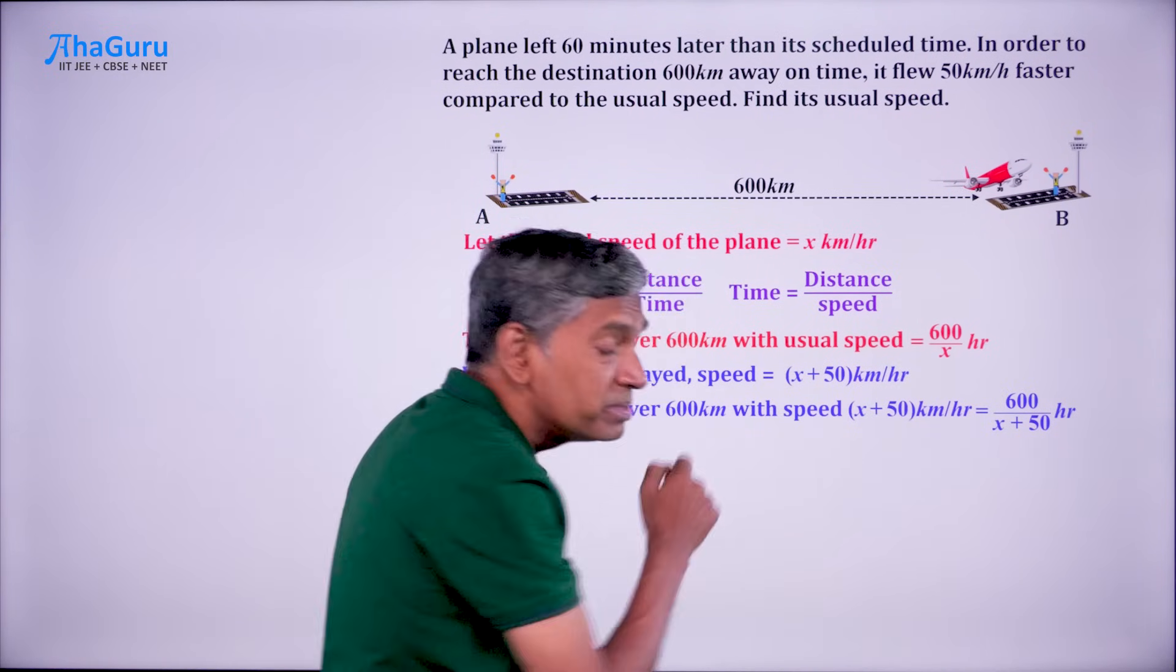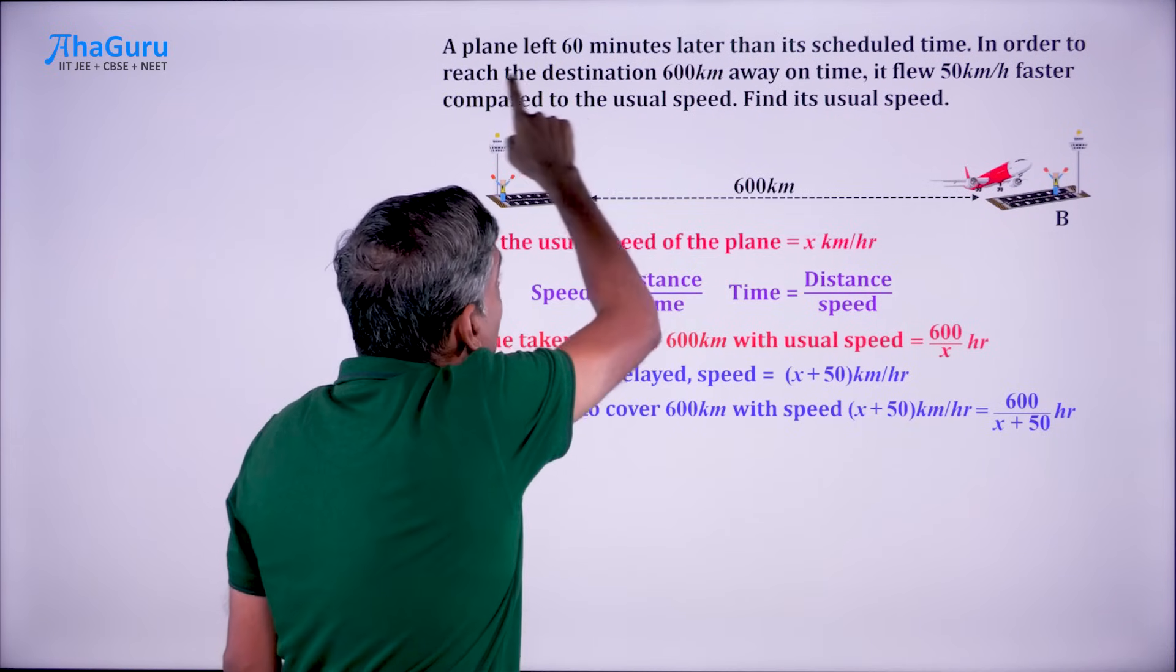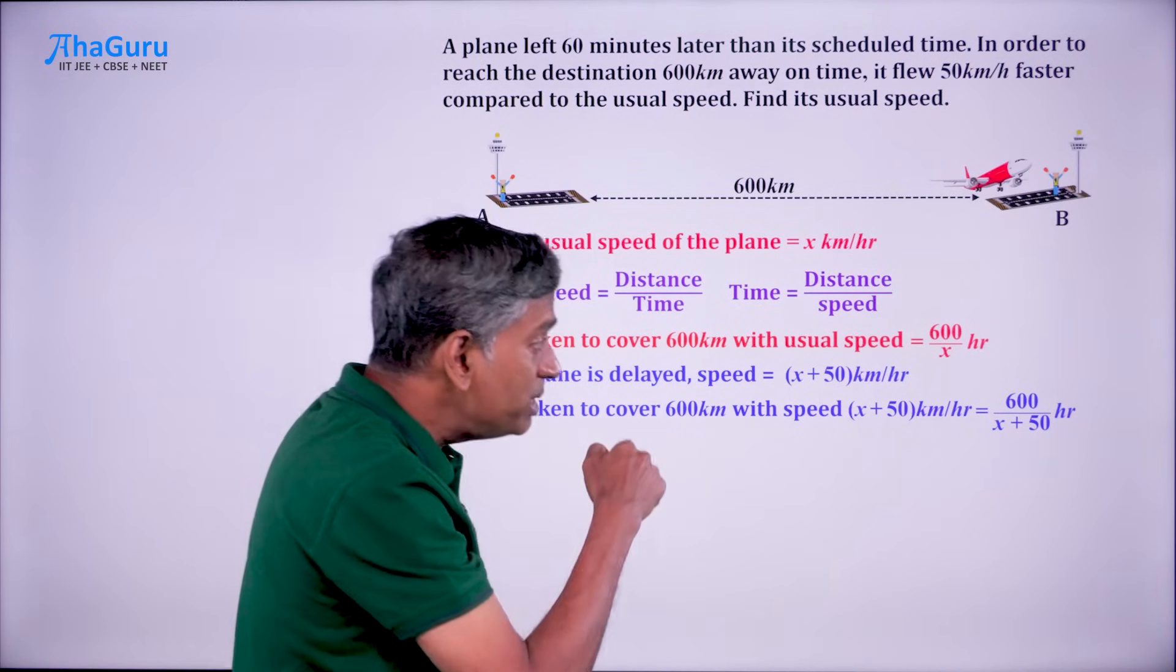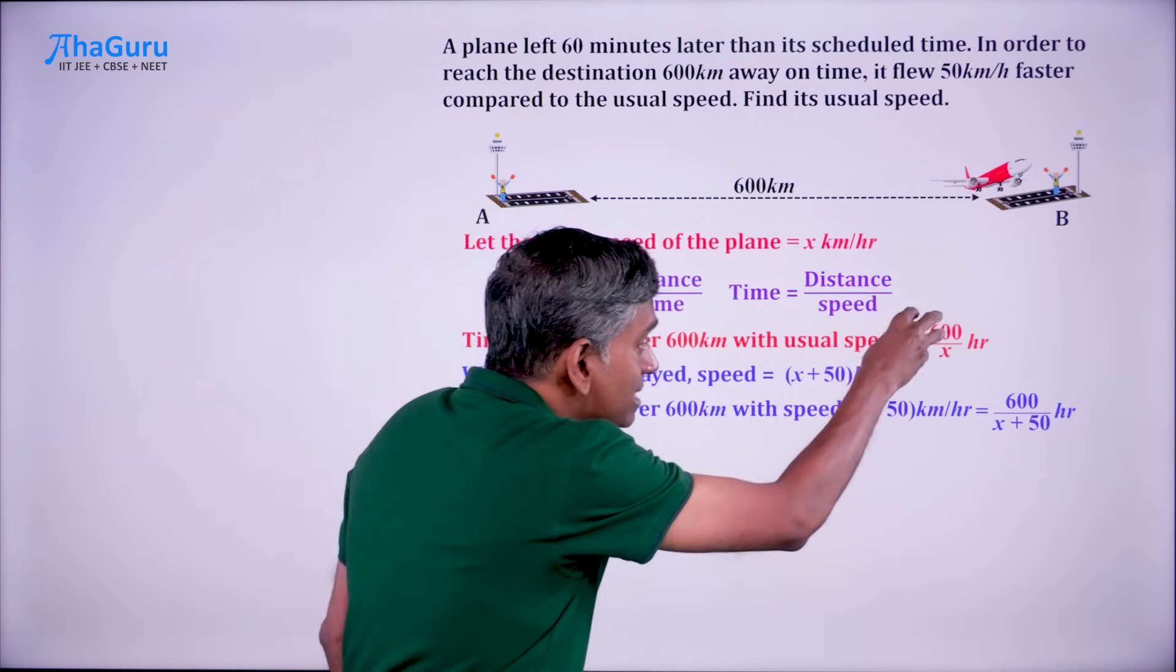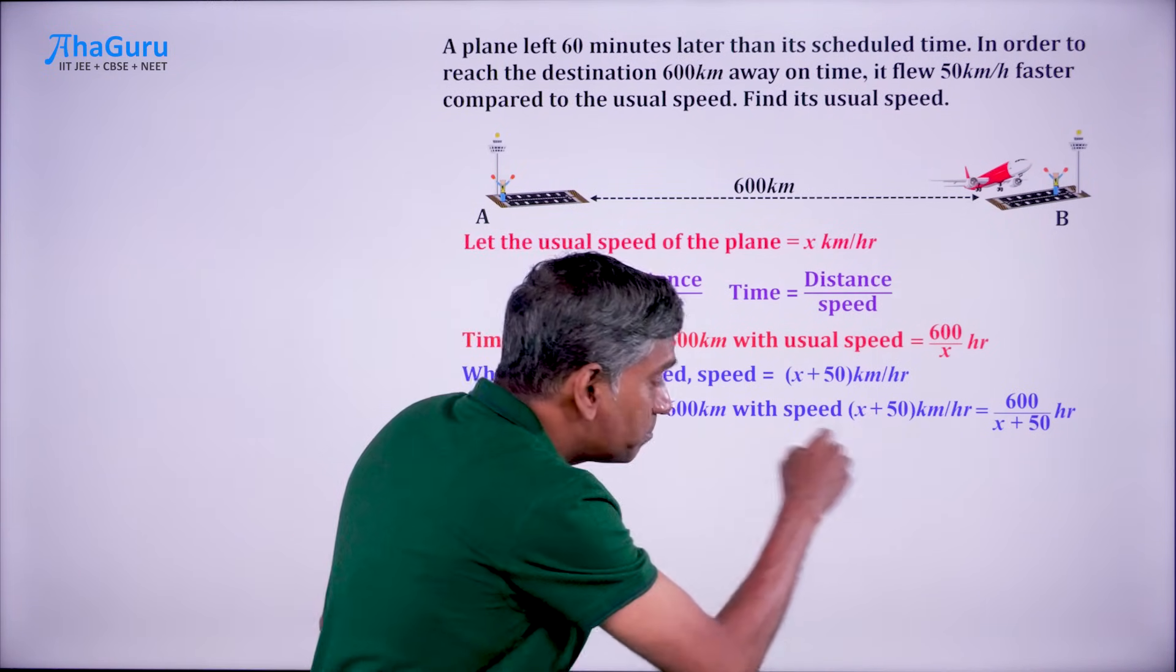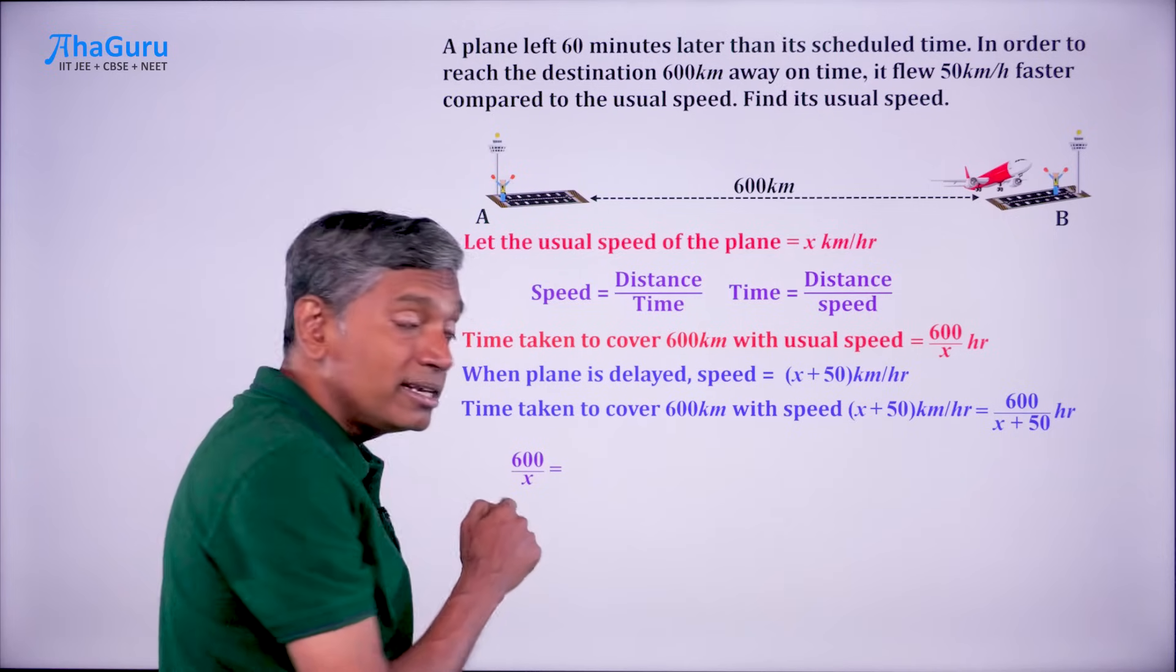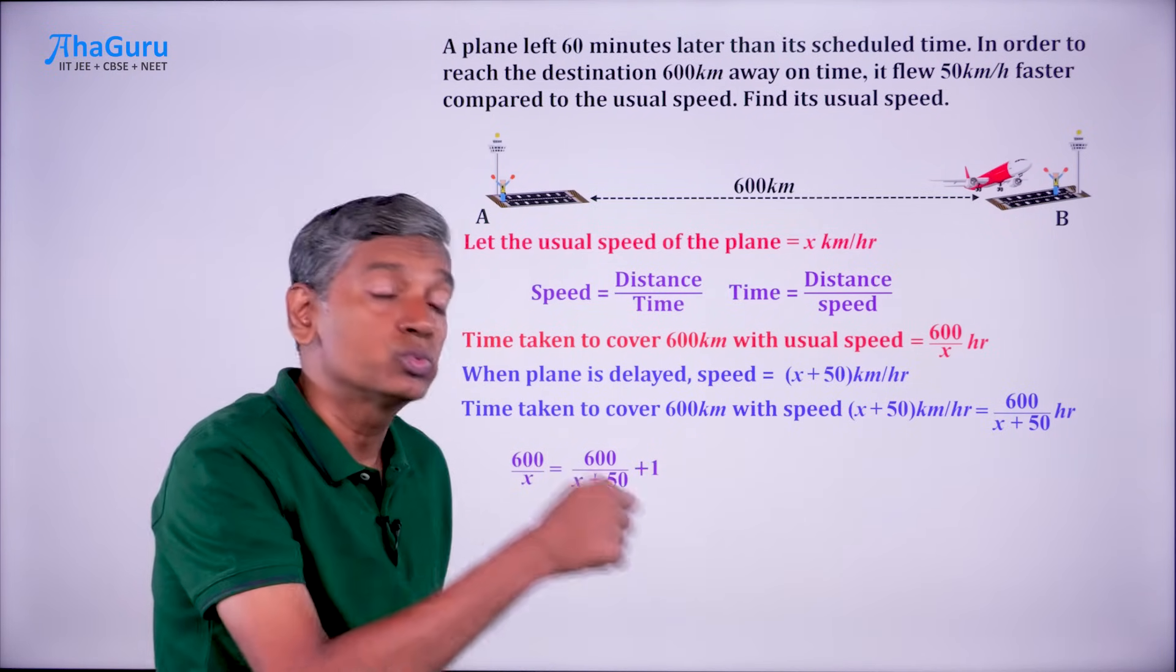Why did we find these two times? Because we know that the plane is 60 minutes delayed, one hour delayed, but it reaches the destination on time. That means the total time is the same. So, 600 by x and 600 by x plus 50 are related. The difference is simply one hour.